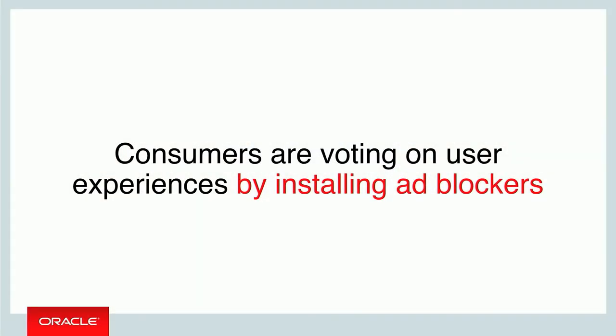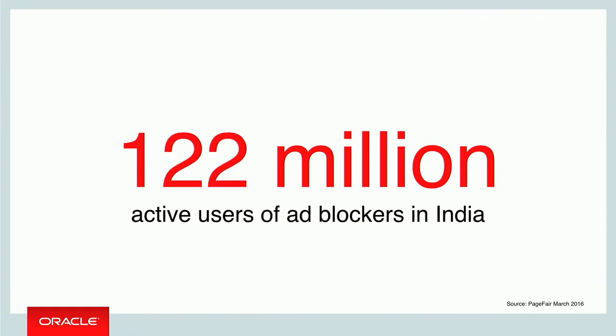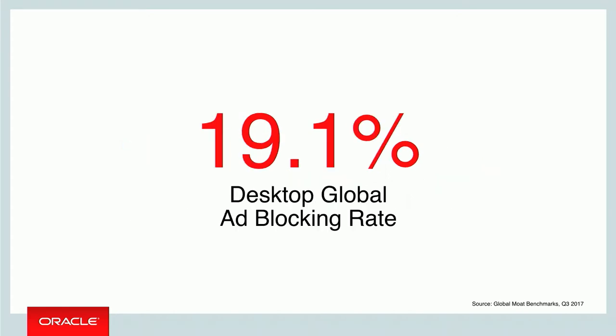Ad blockers are on the rise. If you're sacrificing user experience as a publisher, it's going to increase the prevalence of ad blockers. We're seeing large numbers — particularly with mobile ad blocking. There are 159 million active users in China and 122 million in India using ad blockers. About 19% of desktop users are actively blocking ads in their browsers, and that's a direct impact of bad advertising and sacrificing user experience.